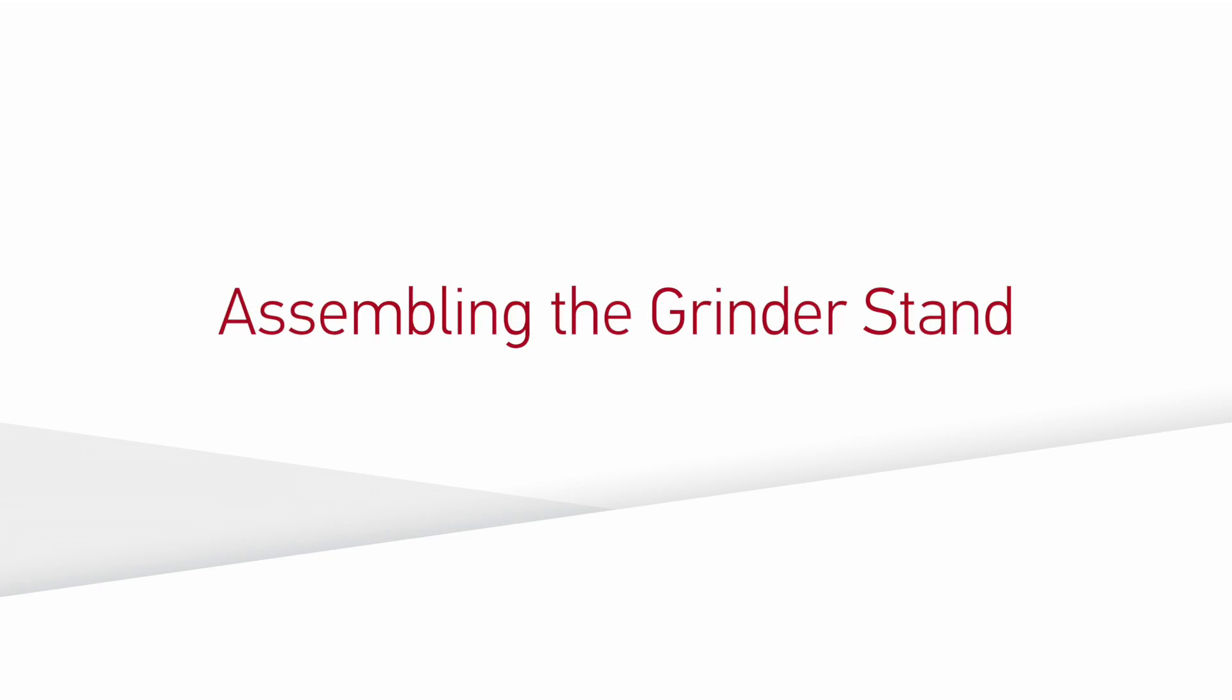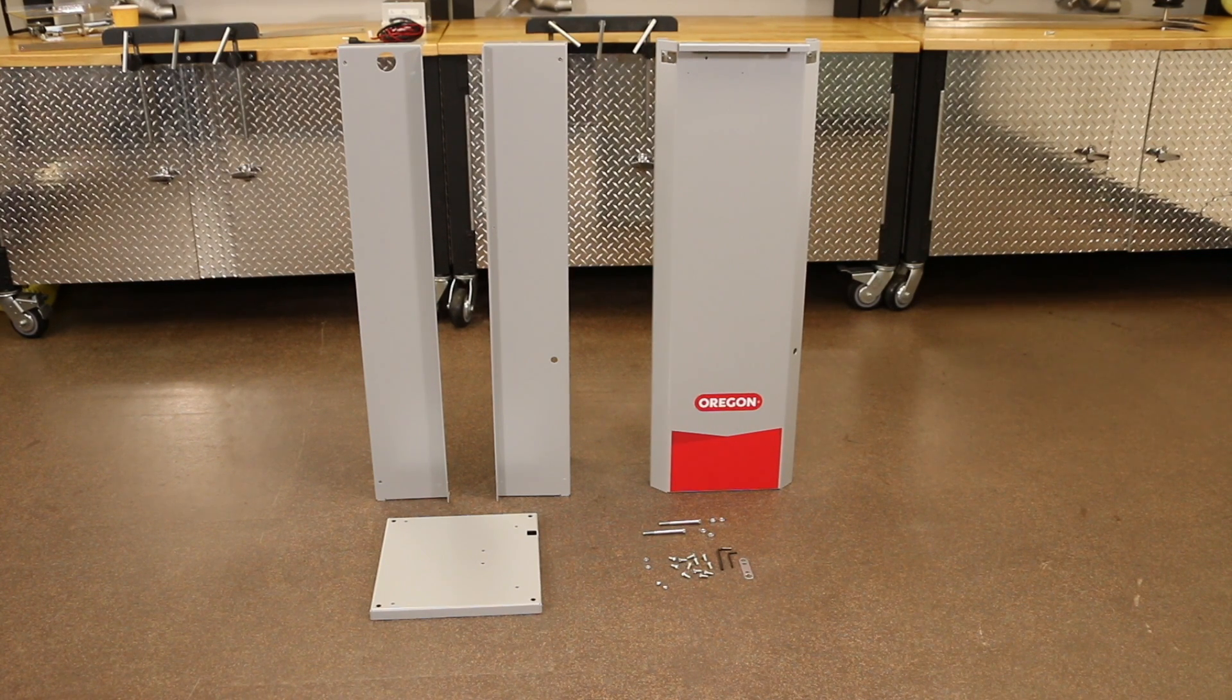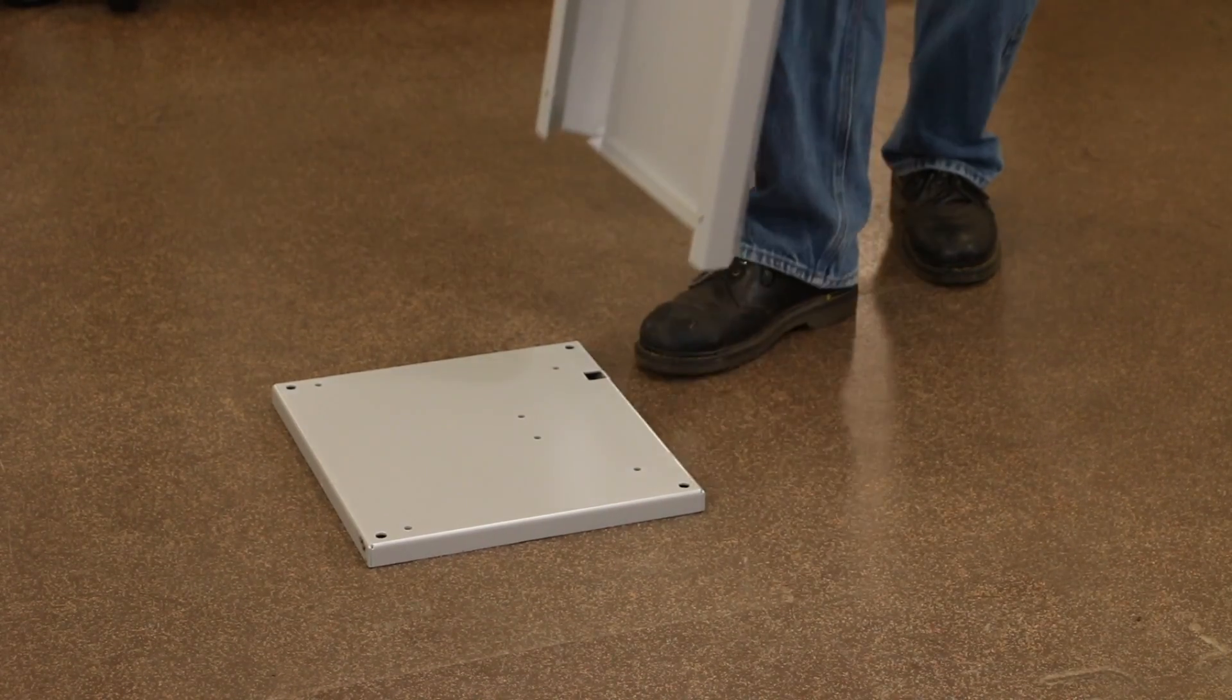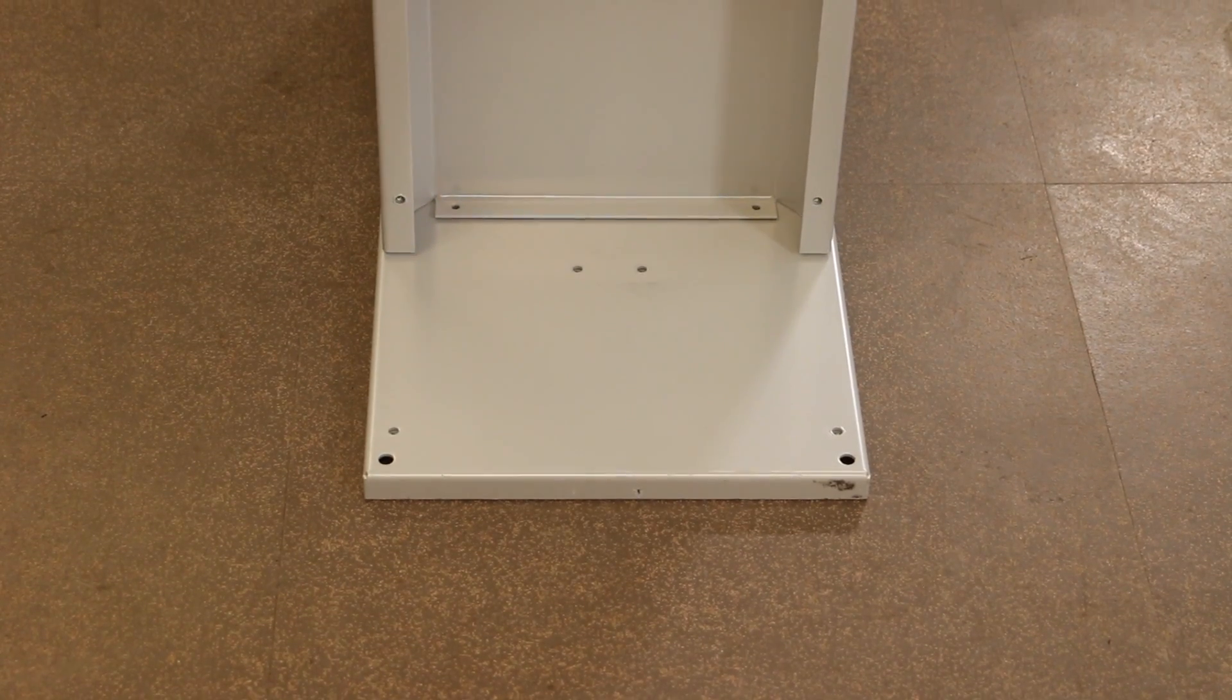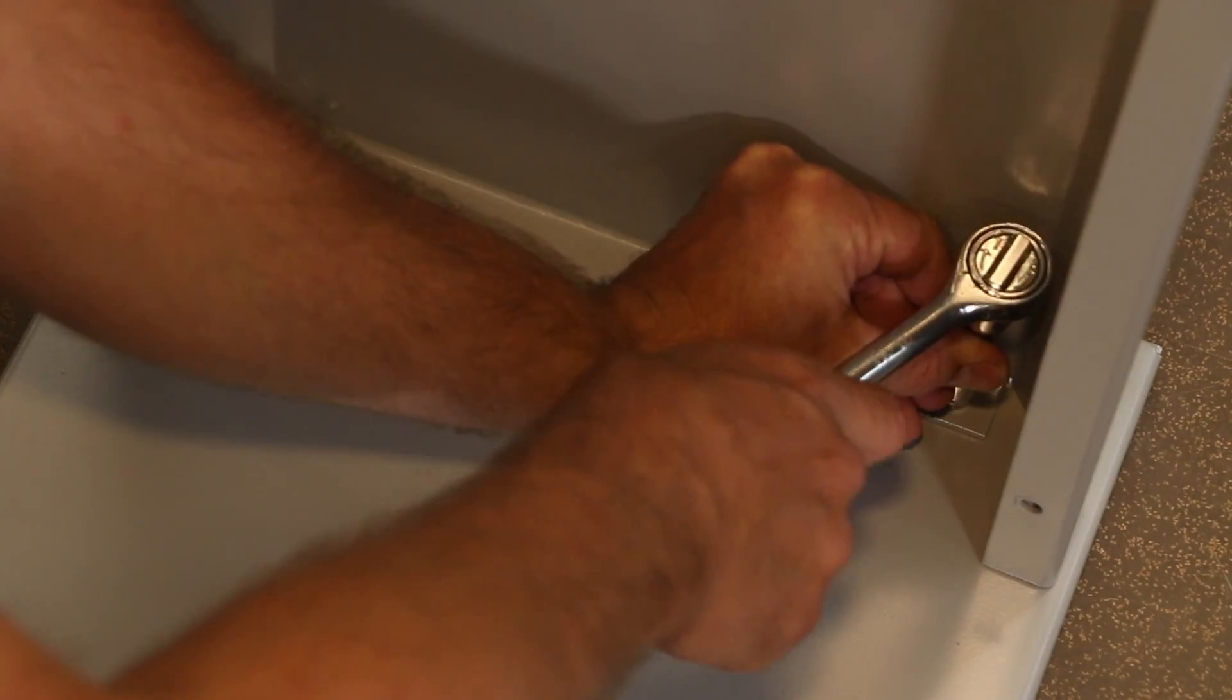To mount the grinders on the stand, begin by assembling the stand, which comes in four pieces – a base, two sides, and the front. Start by placing the base piece on the floor. Place the front on top of the base by aligning the holes located on the front right and left corners. Using a 10mm wrench, fasten the pieces together with the supplied hex head bolts.